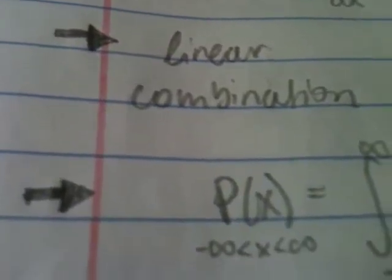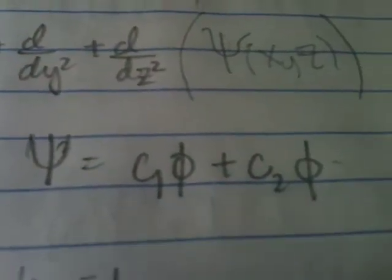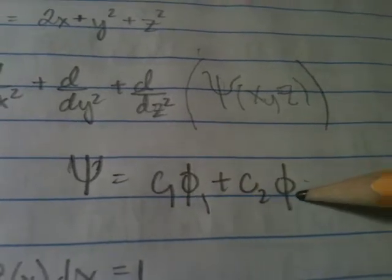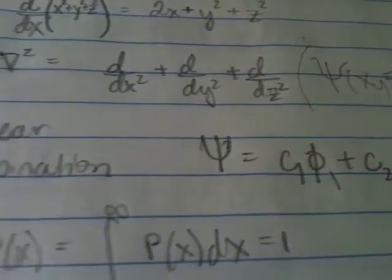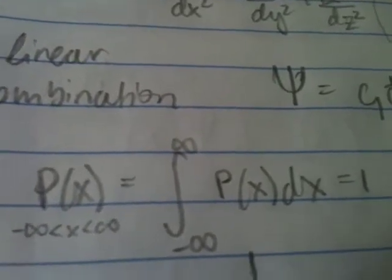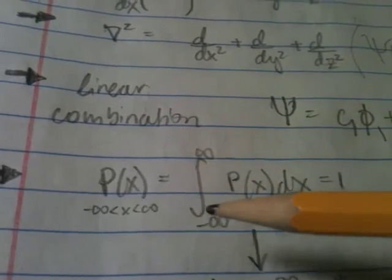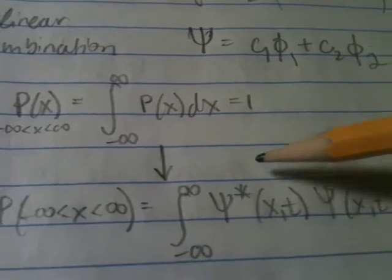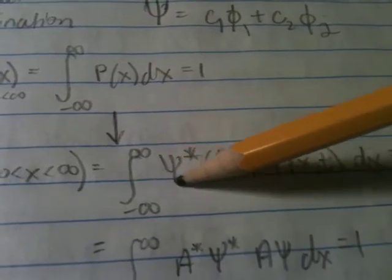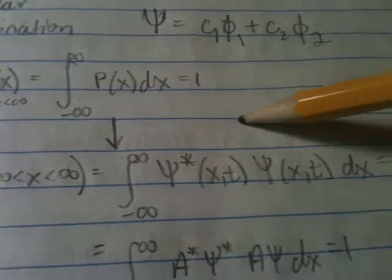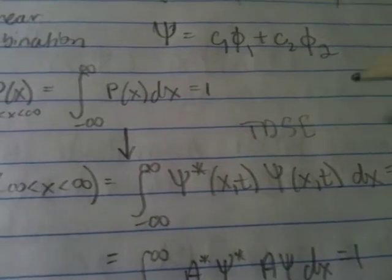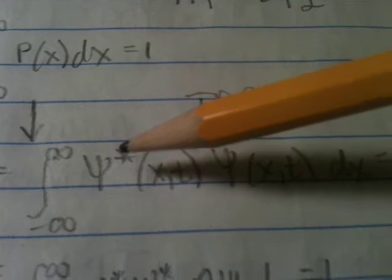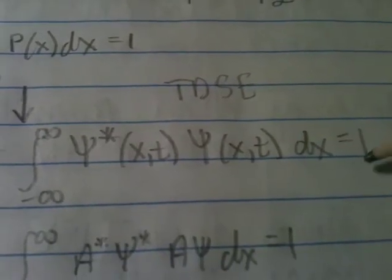Linear combinations of wave functions. The probability of finding x in a range is taking these psi functions and squaring them. So if you take psi that is dependent on time, your time-dependent Schrödinger equation, for example, is also time-dependent. You take these squared. You take the complex conjugate times the psi function, equal to 1.